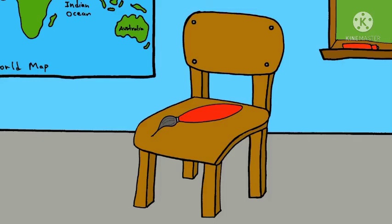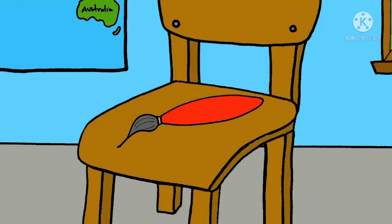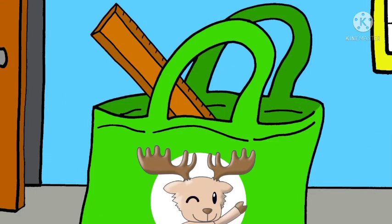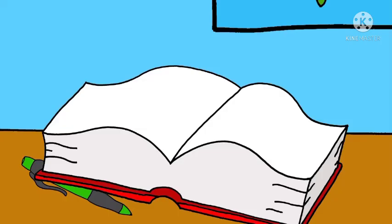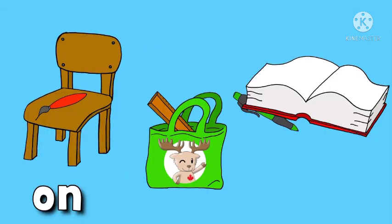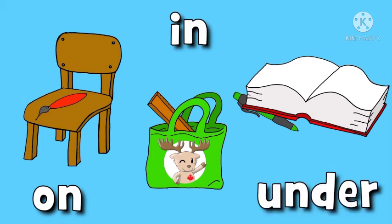Where is the paintbrush? On the chair. It is on the chair. Where is the ruler? In the bag. In the bag. Where is the pencil? Under the book. Under the book. On, in, under.